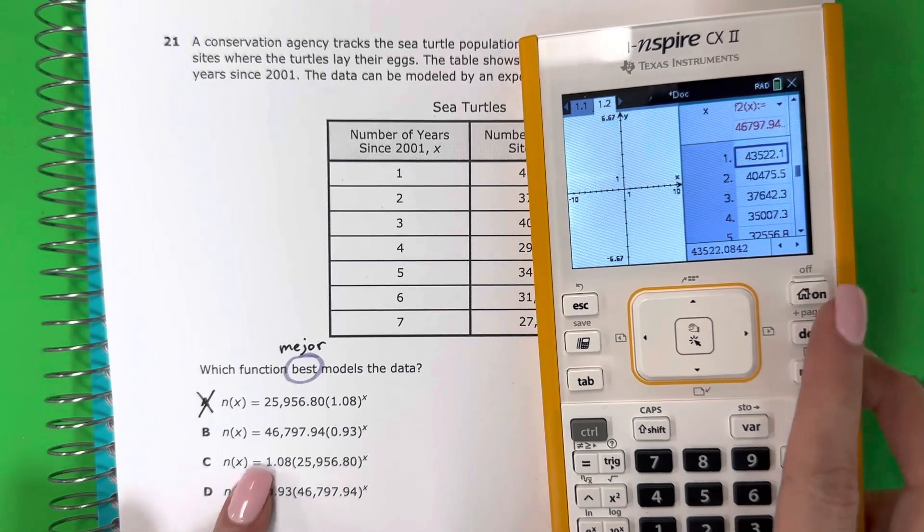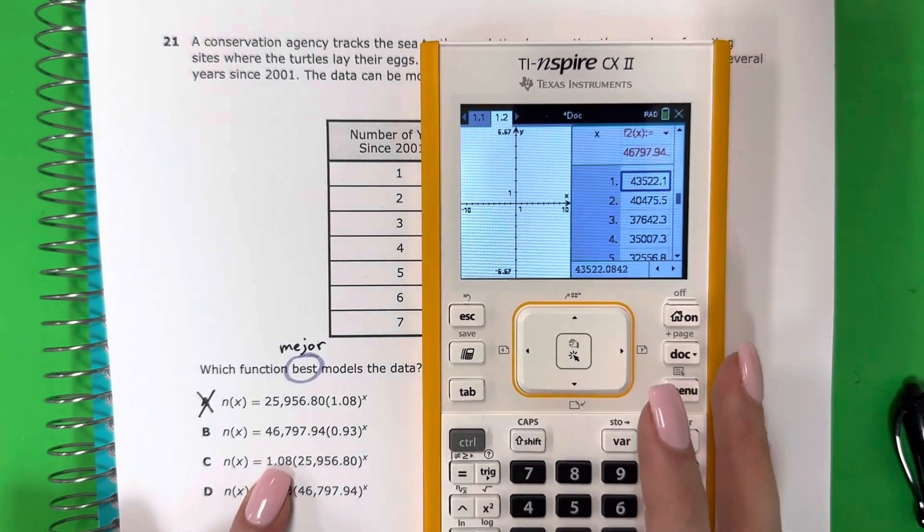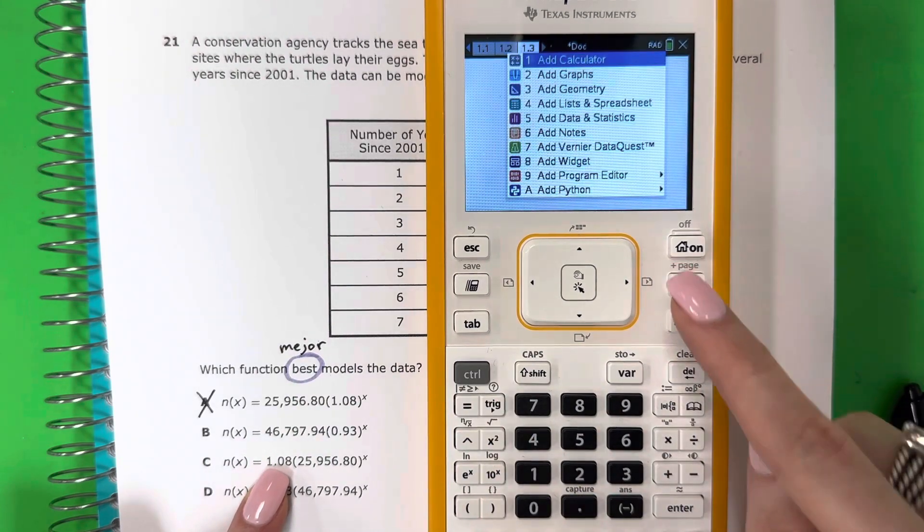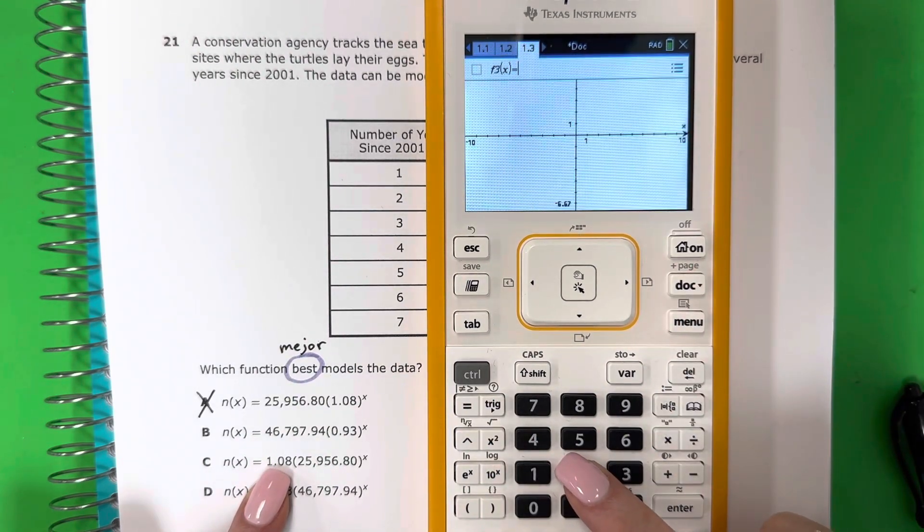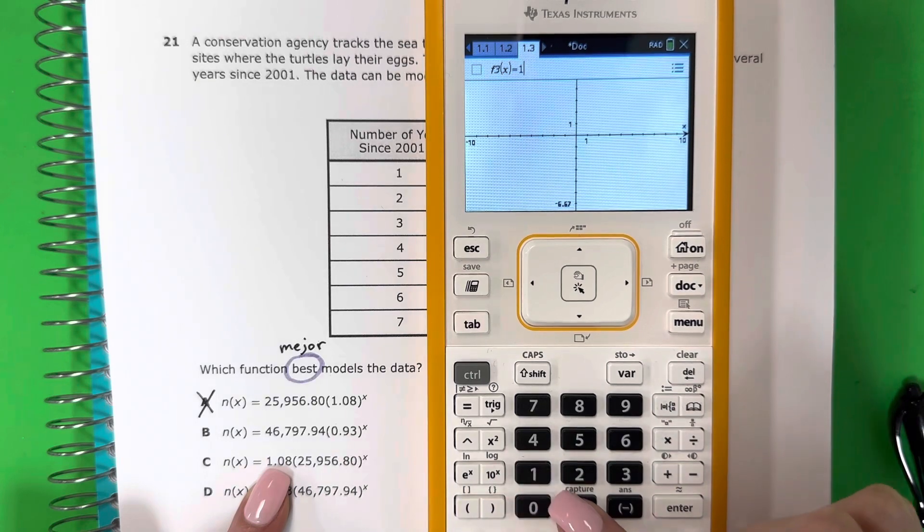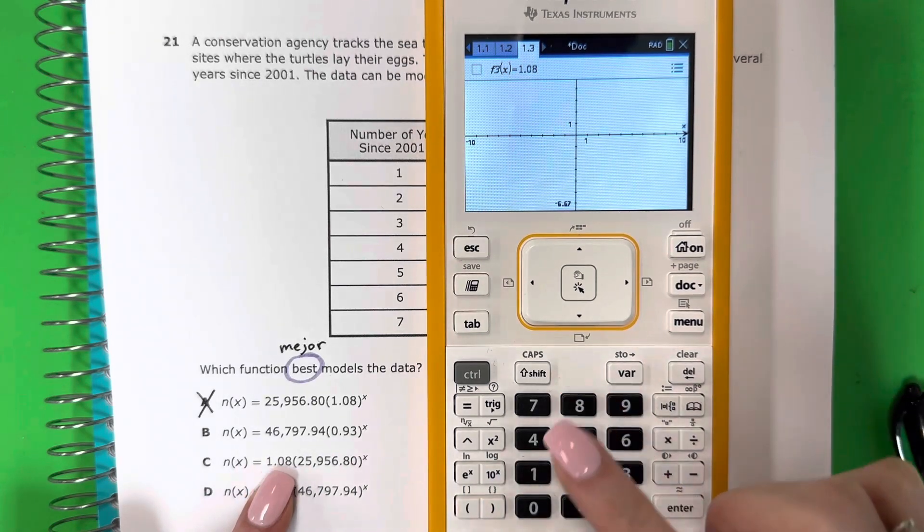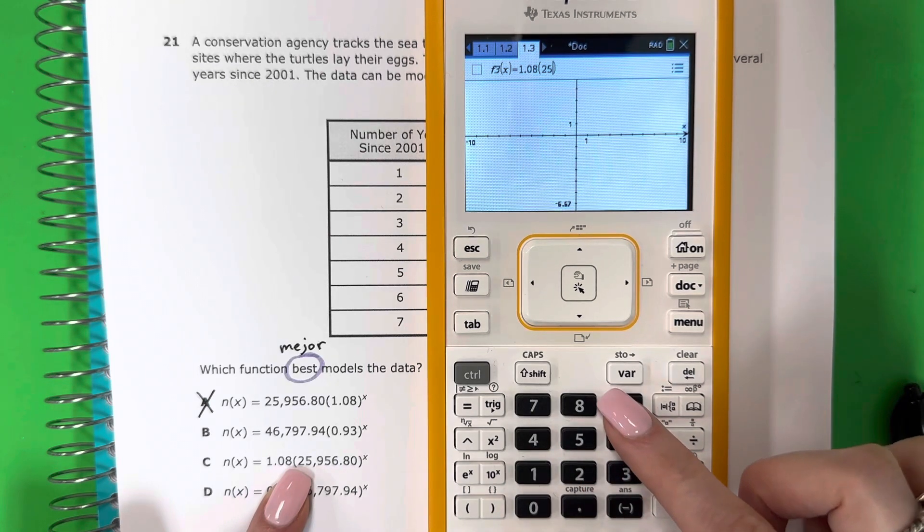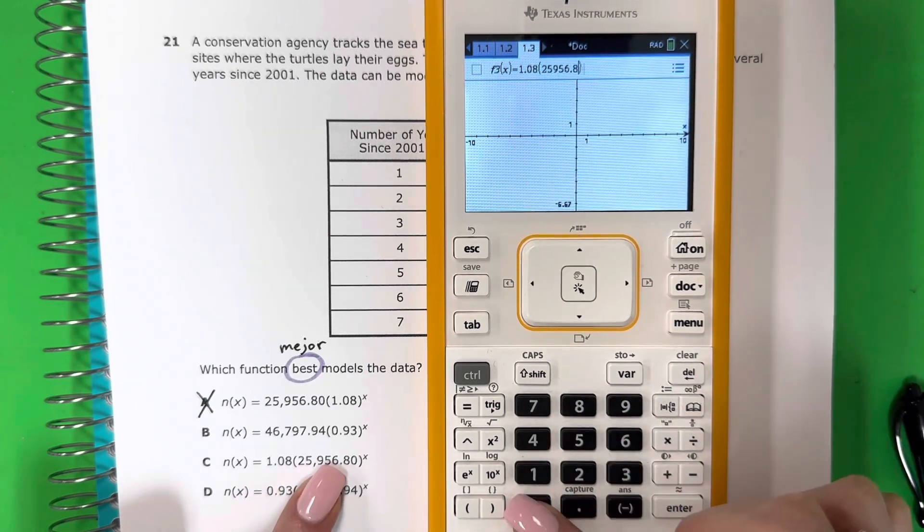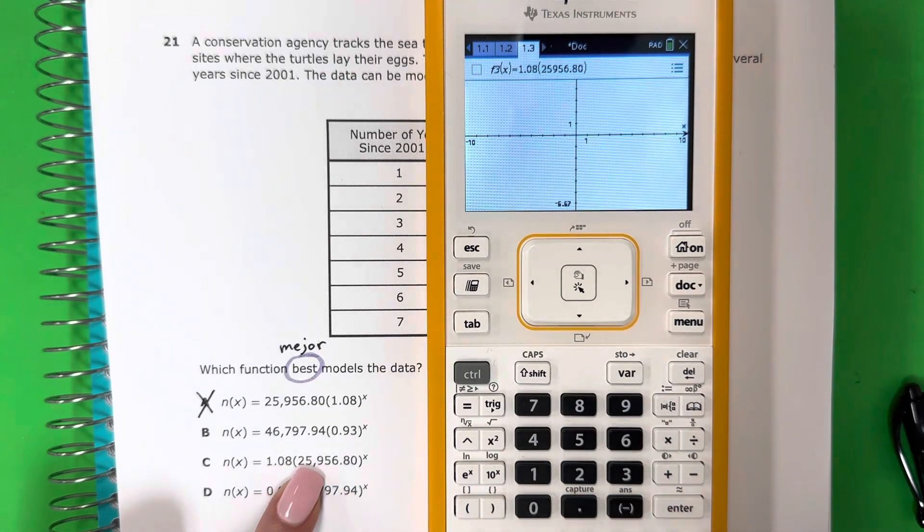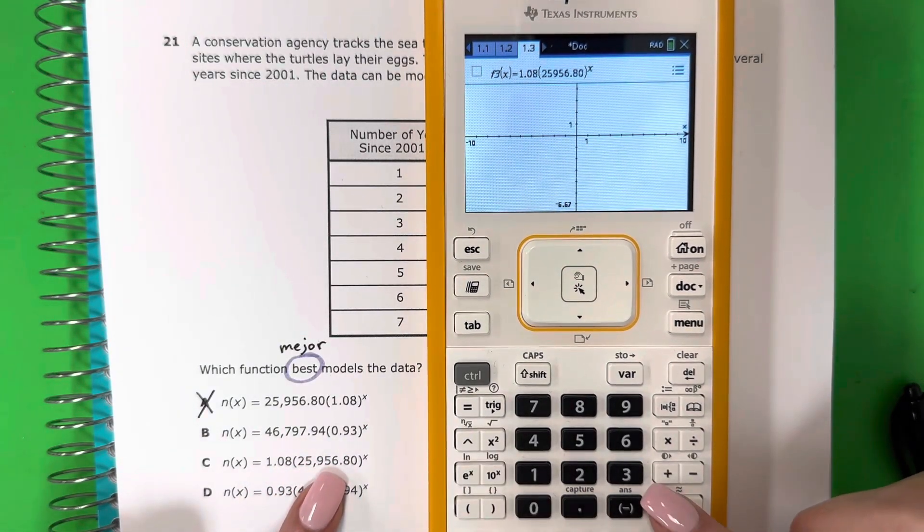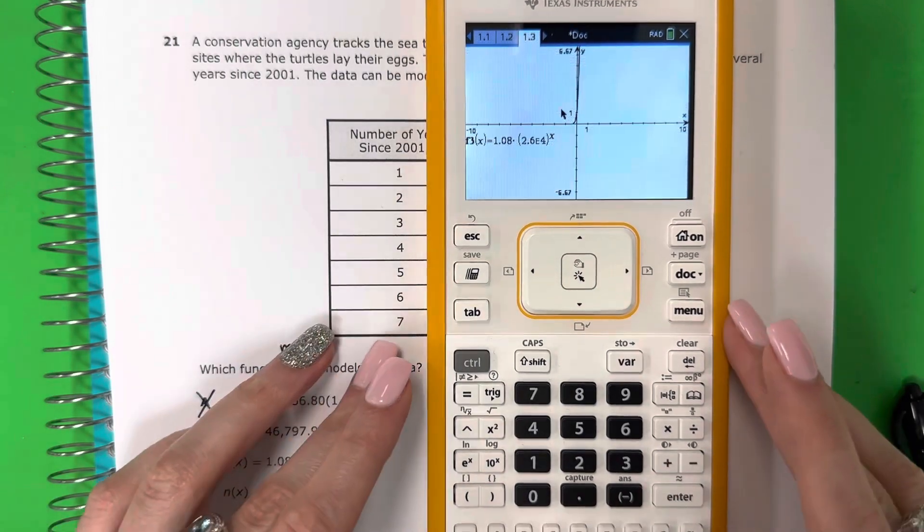Let's go ahead and do C. So let's go ahead and open a new page, una nueva pestaña. Control, doc. And I want 2. Let's go ahead and put 1.08, parenthesis, 25,956.80. Parenthesis, remember, no comma, sin la coma. Exponent, x. Push enter.